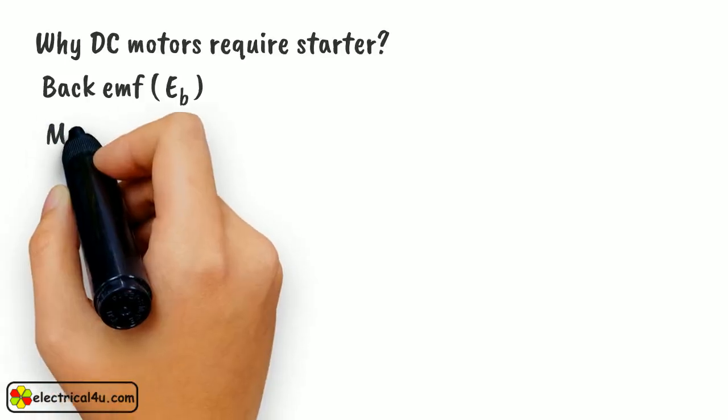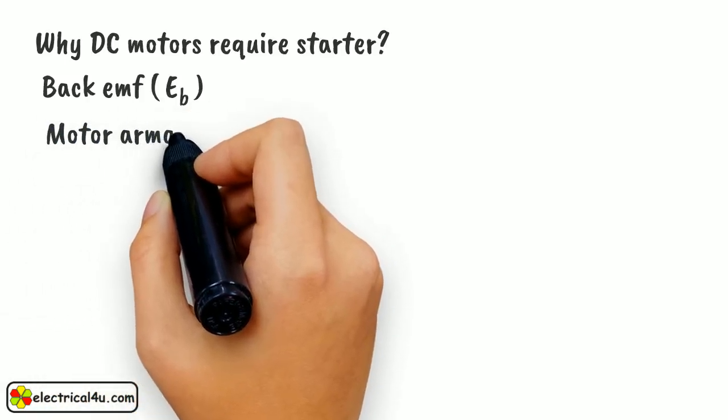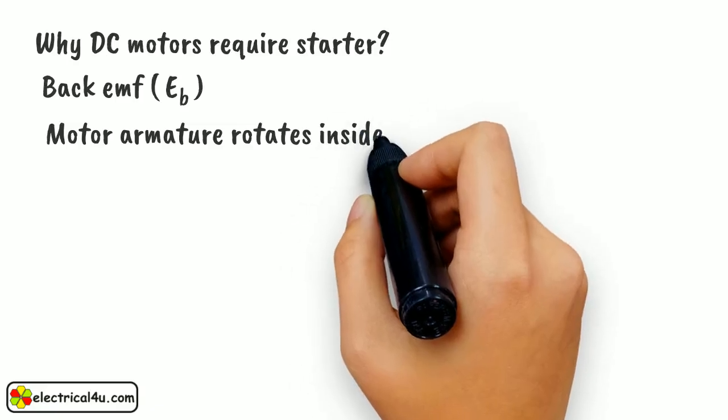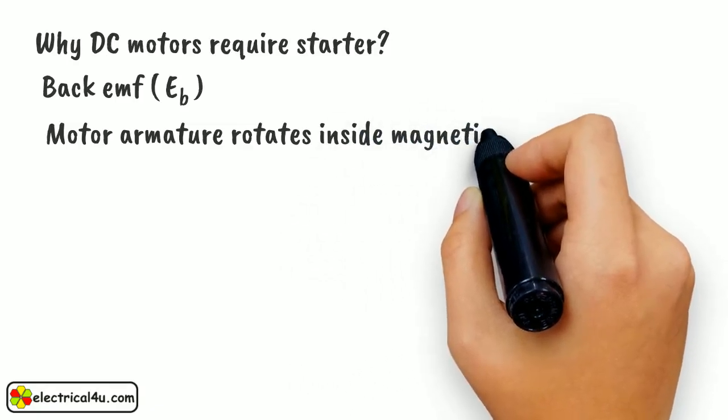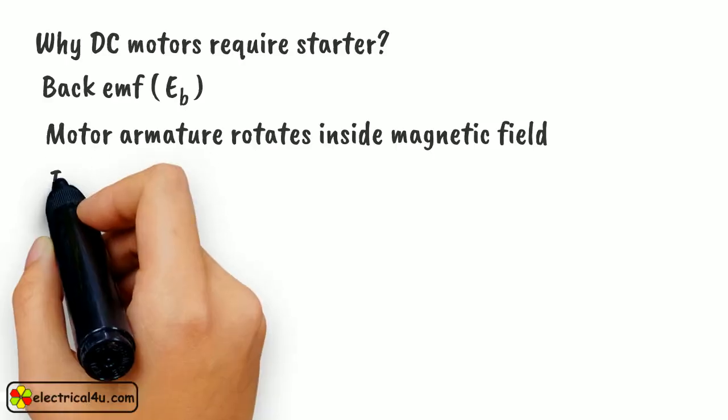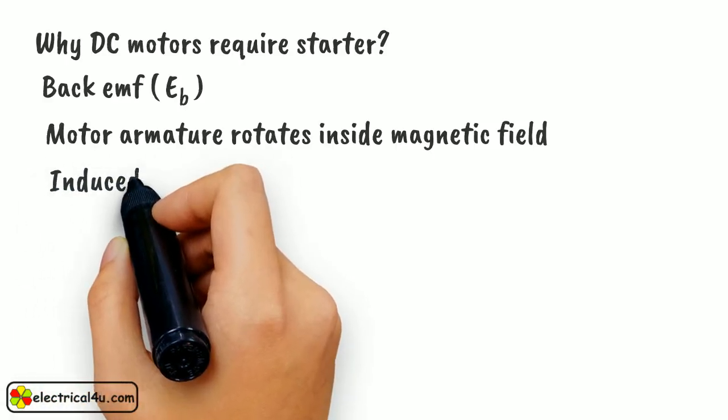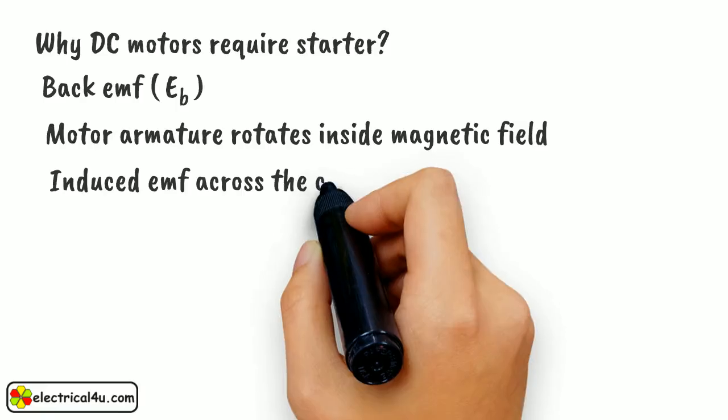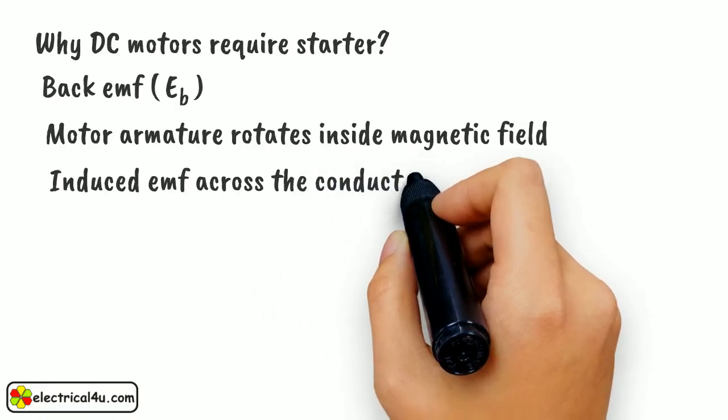Actually, the back EMF is developed because the motor armature rotates inside the magnetic field. When it rotates because of generating action, that is, movement of conductors in the magnetic field, there must be an induced EMF across the conductors, according to Faraday's laws of electromagnetic induction.